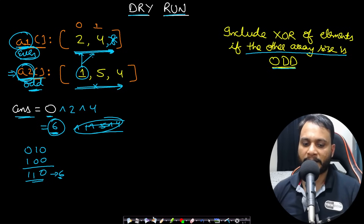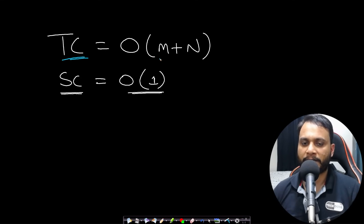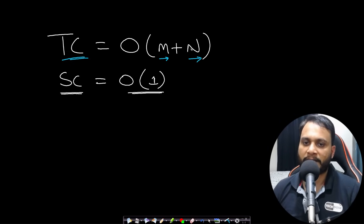The time complexity is O(M + N) since we iterate through the first and second arrays at most once each. The space complexity is O(1) as no extra space is used.